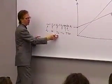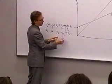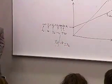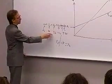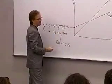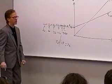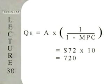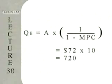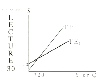So: 50 plus 20 plus 30 minus 10 gives us 90, and then minus MPC times taxes, which is 0.9 times 20 equals 18, giving us A1 = 72. That's our autonomous spending. Equilibrium income QE equals A1 times the multiplier: 72 times (1 over 1 minus 0.9) = 72 times 10 = 720. That's the equilibrium level of GDP.